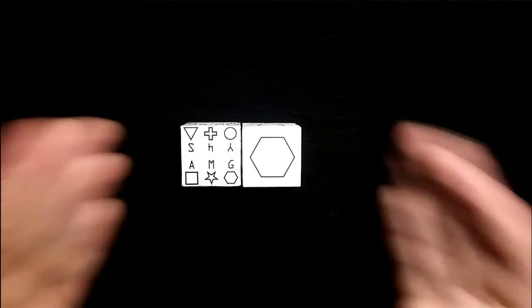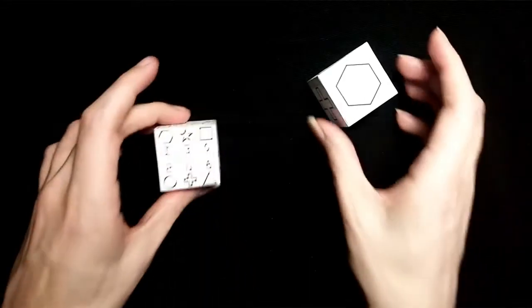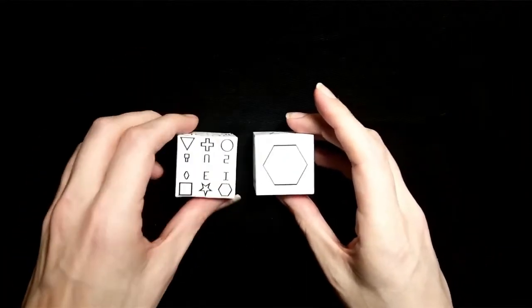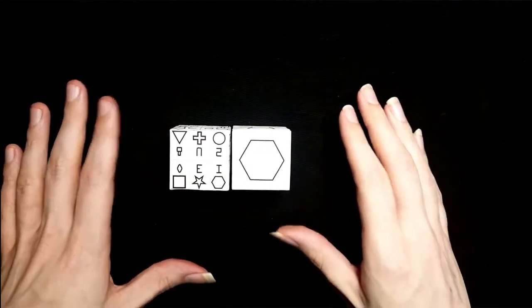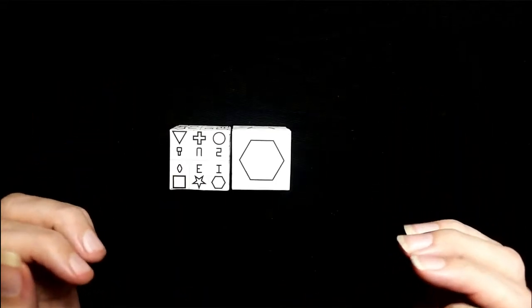And of course, since it's a D10, that means we can also use it as a D100. Rolling a J, and I, which corresponds to some number in decimal that I am going to put on the screen right now.